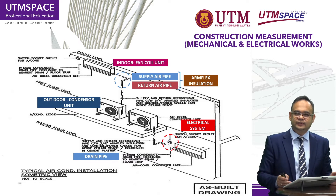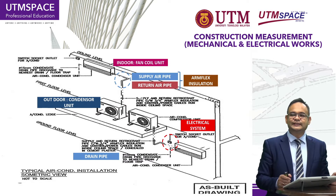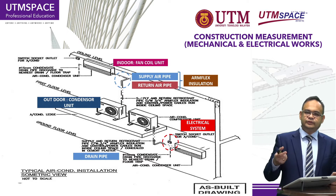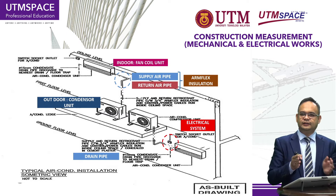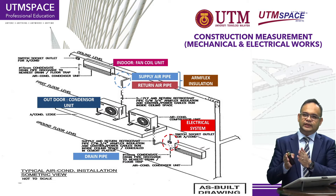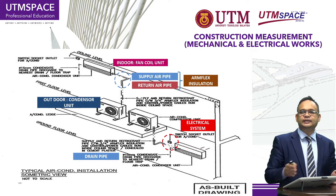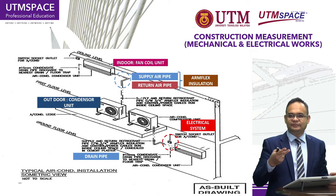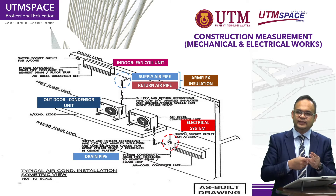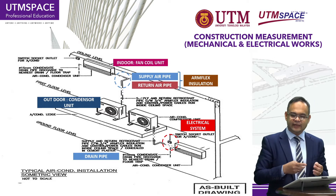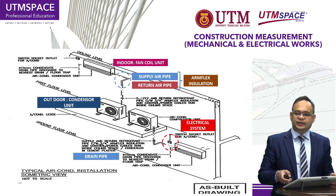Another pipe is what we call the condensate pipe, which normally uses PVC pipe. From the FCU we channel the condensate water to the nearest drain. There are three types of pipes for air conditioning installation: supply pipe, return pipe, and condensate pipe. The supply pipe requires insulation.